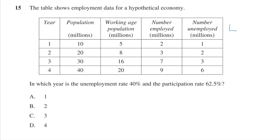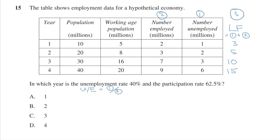Let's see if we can apply our understanding of these terms and formulas to some past HSC questions. With 2017's HSC question 15, we'll get to practice some calculations. First, let's figure out the size of the labor force, because we need that for both the unemployment rate and the participation rate. The labor force is calculated by adding employed with unemployed for each year. Next, let's calculate the unemployment rate for each year. This is done by dividing the unemployed by the labor force of each year and expressing them as a percentage.